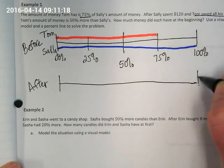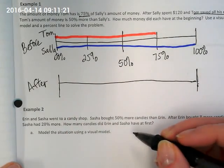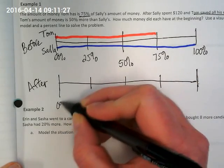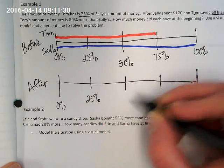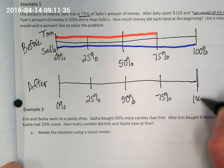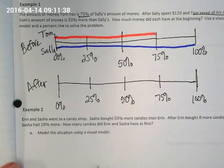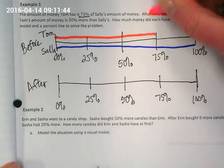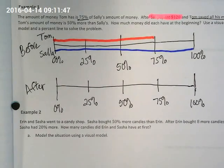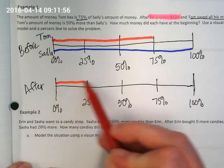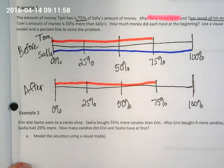This is the 'before' and now we're going to do 'after' — and again we're going to compare Tom and Sally. We want our percent line labeled the same: 0%, 25%, 50%, 75%, and 100%. This right here is the only mention of an amount of money, so that's going to be important as we try to figure out how much they both had at the beginning. Tom's line stays the same — did he spend anything? No.